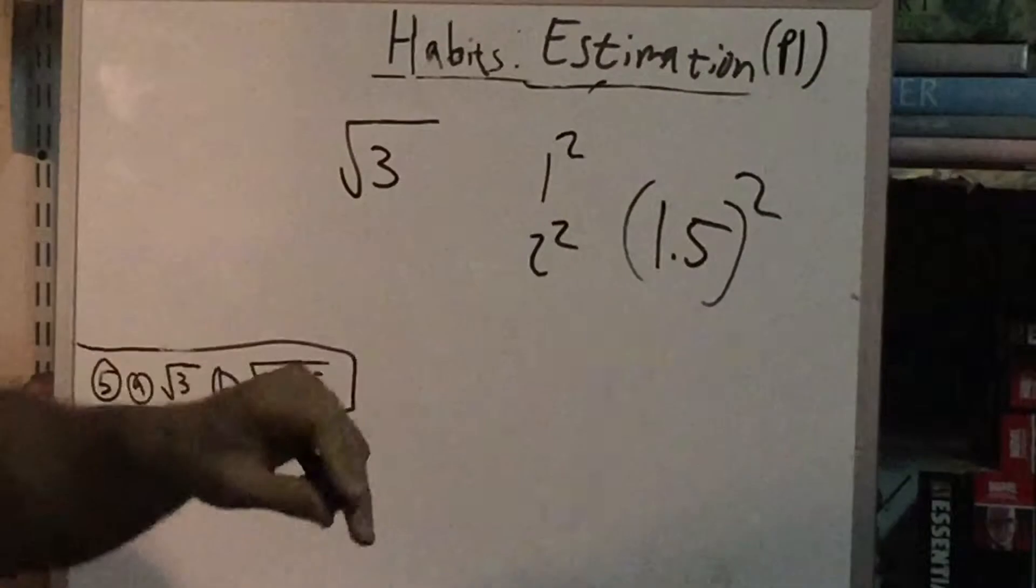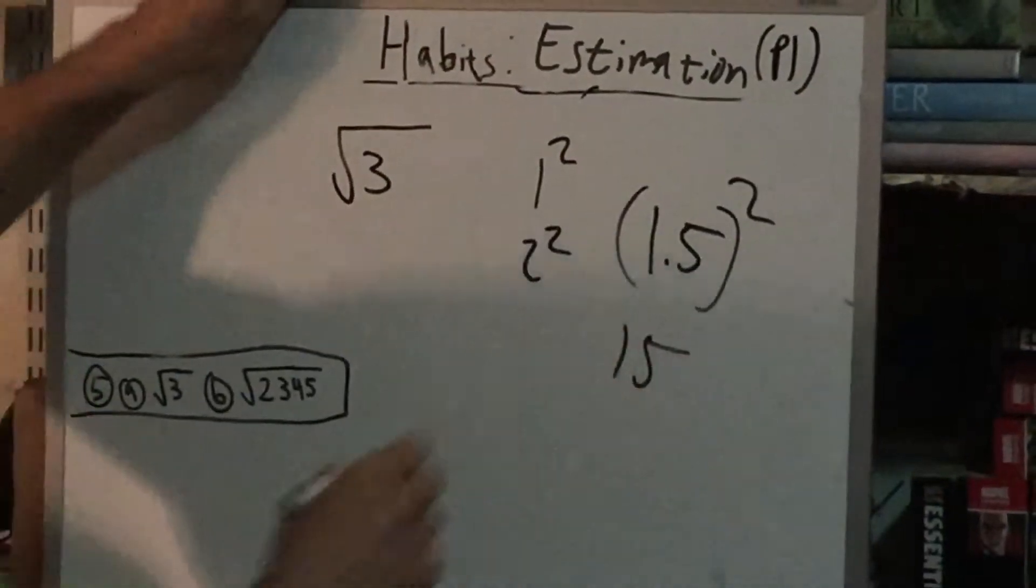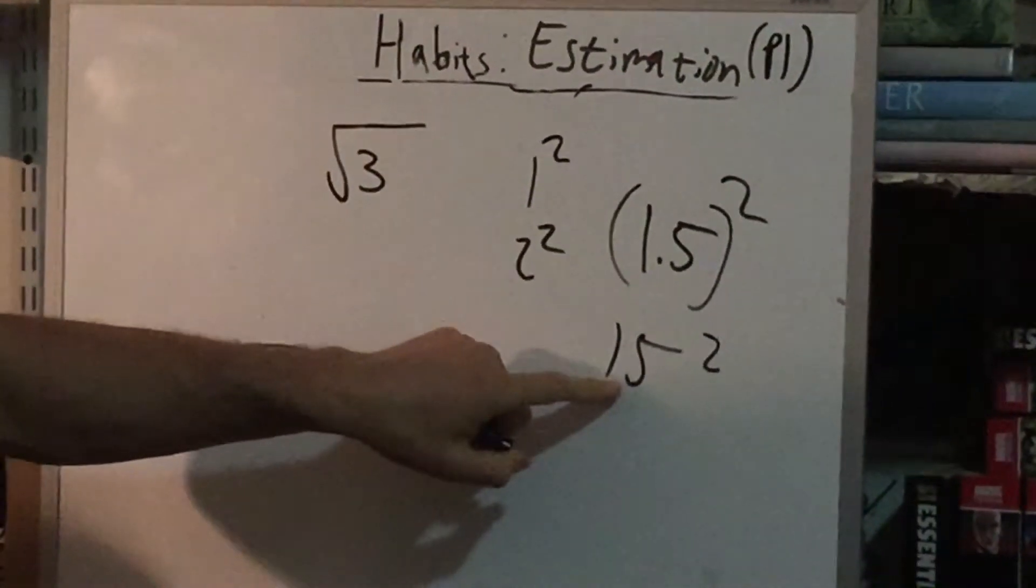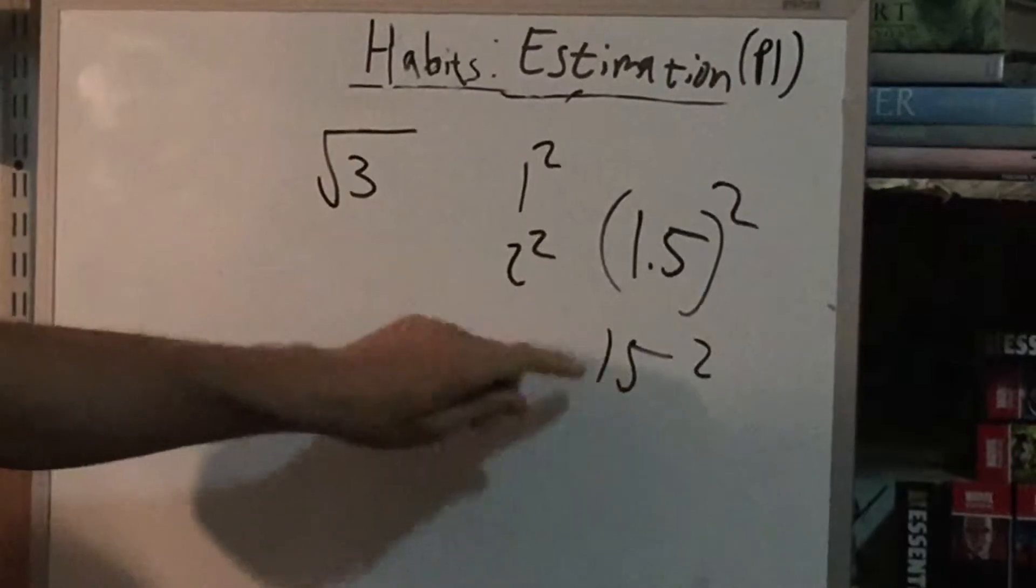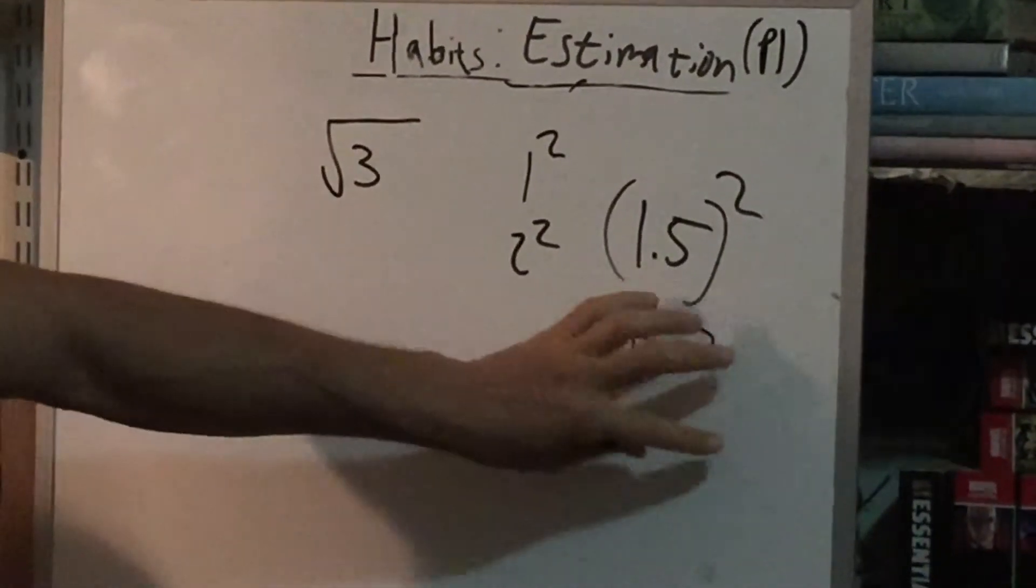Now, if you've been practicing your tricks, 1.5 can be thought of as just a 15. So 15 squared, that's trick 2. So trick 2 would be 1 times 2, so that's 2, 5 times 5 is 25, so this is 225.